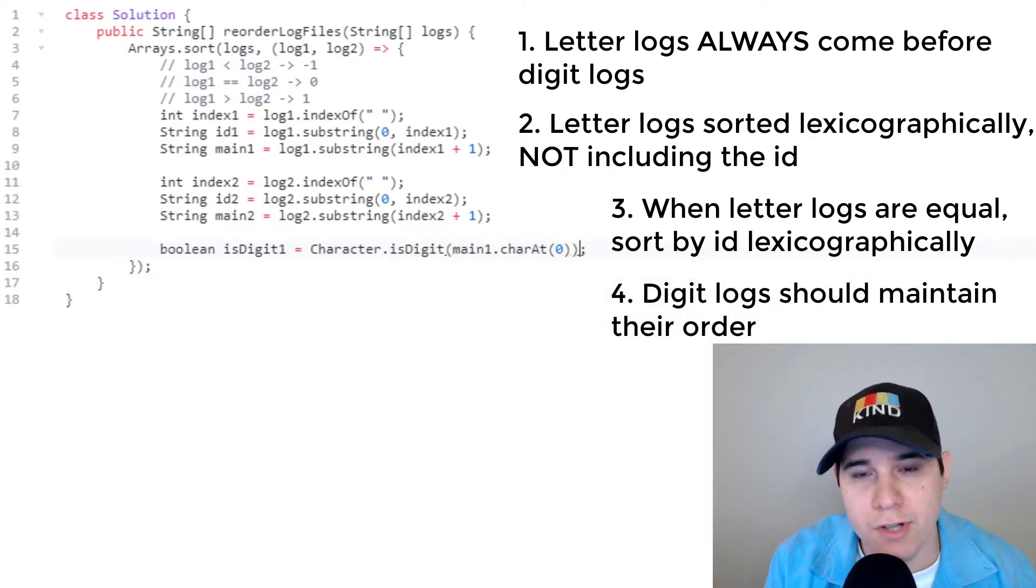So if we know that the very first character is a digit, then we know the rest of the log must contain all digits. If the character is not a digit, then we know it must be a letter log. Once again, we're going to perform the same logic for log two.